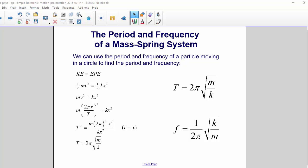After a bit of algebra, we get the period equals 2π times the square root of m over k.